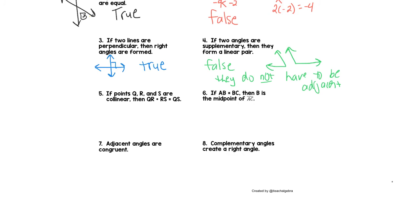Number five, if points Q, R, and S are collinear, then QR plus RS equals QS. Well, if they look like this, that's true. QRS is much more than QS, right? So this is false because the order can be changed from what you assume it should be.